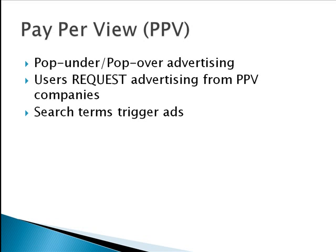So when John Doe goes to a site and does a search, the pay-per-view company keeps track of all of that and feeds him appropriate ads based on what he's looking for. It's highly targeted because you do get to specify the search terms that are going to trigger your ads.